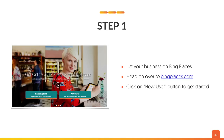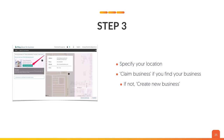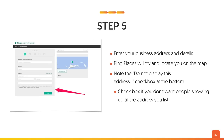So let's optimize your Bing listing. Go to BingPlaces.com and click the New User button to get started. Locate yourself on Bing Places and make sure you're not already listed — very important, because someone on your team could have already done this. Then specify your location, claim it, and if you already have a business listed, claim it; if not, create a new business. Step four: set up and create an account — pick or create an account that all relevant people have access to, notably the business owner. Step five: enter your business address and details. Bing Places will try to locate you on the map. Note the 'Do Not Display This Address' checkbox at the bottom — check this box if you don't want people showing up at your address.